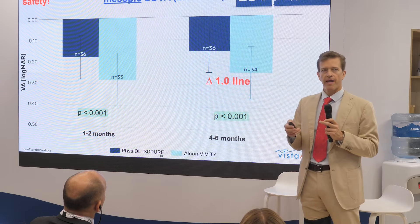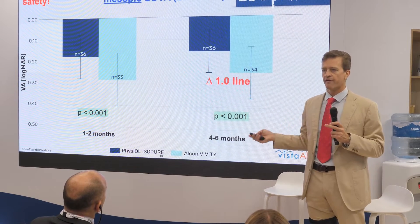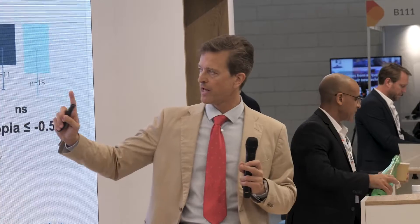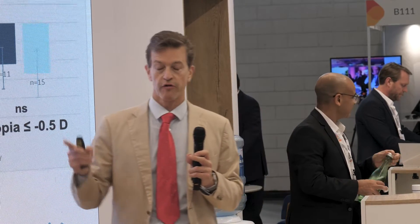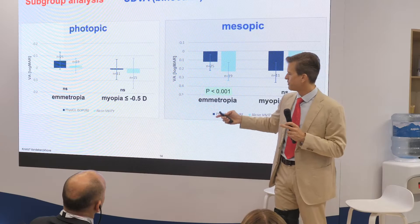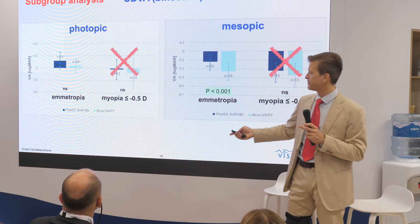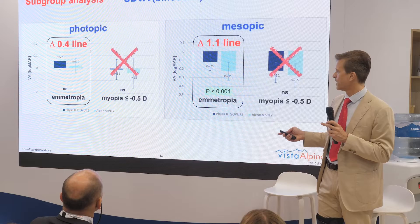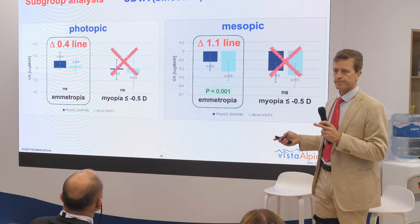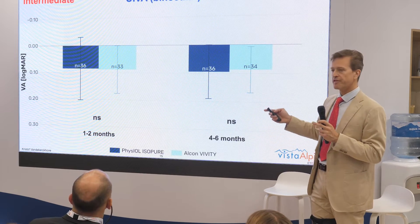We conducted subgroup analyses to ensure there were no confounding factors. We observed that for the dominant eye there were more myopic outliers in the vivity group, so we performed a subgroup analysis excluding those outliers. The data remained the same: half a line photopically, full line under mesopic conditions, in favor of isopure.